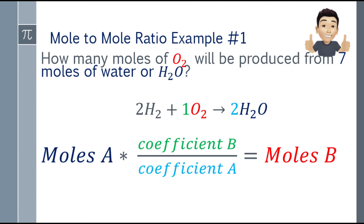Coefficient B is 1, because O2 is what we're looking for and its coefficient is 1. Coefficient A — the coefficient of the given (H2O) — is 2. And moles B is O2, which is what we're finding. So let's substitute into the formula.